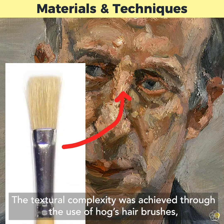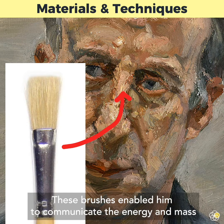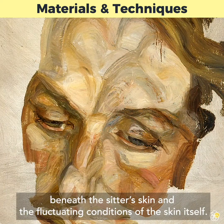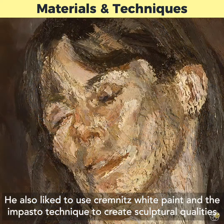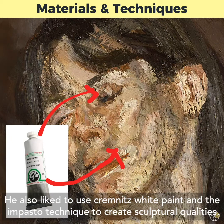The textural complexity was achieved through the use of hog's hair brushes, known for their stiffer bristles compared to sable brushes. These brushes enabled him to communicate the energy and mass beneath the sitter's skin and the fluctuating conditions of the skin itself. He also liked to use Cremnitz white paint and the impasto technique to create sculptural qualities.